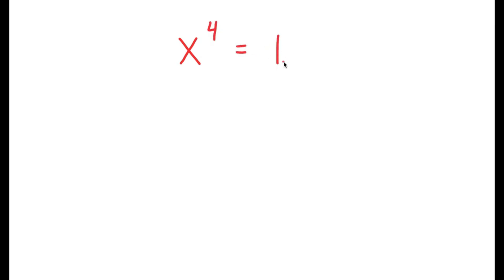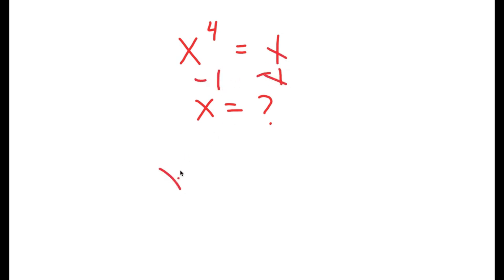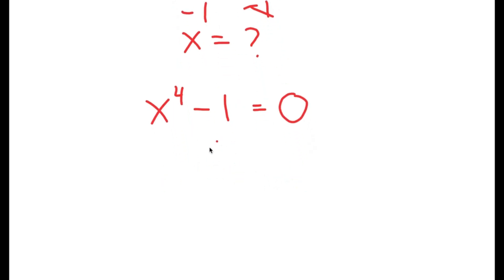In this video, I'm going to solve the equation x to the power of 4 is equal to 1. To solve this, I need to find the value of x. I'm going to subtract 1 on both sides, so I get x to the power of 4 minus 1 is equal to 0. Now from here, I'm going to rewrite this as x to the power of 2, squared, minus 1 to the power of 2 is equal to 0.